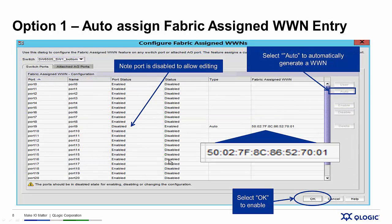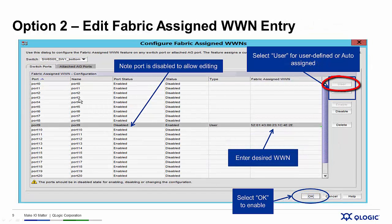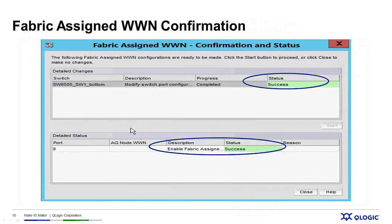When we do that, we'll get a Configure Fabric Assigned Worldwide Names management window. The port should be disabled, and then we have a couple of different choices on how we assign those worldwide names. The first option is Auto Assignment, where the Brocade Fabric generates a worldwide name and assigns it to that particular port. The other option is a user-defined worldwide name — we select the User button, enter the desired worldwide name, and select OK. The Brocade Network Advisor will then go out, make all those configuration changes, and we hit the Start button. It will come back and tell us whether it completed successfully or not.